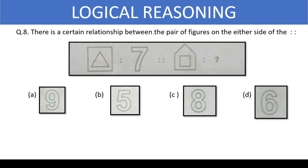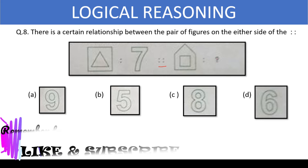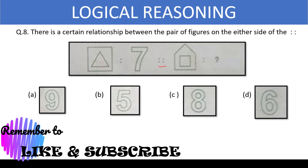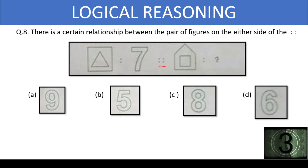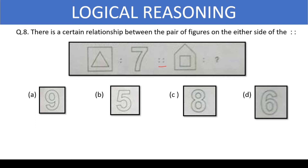There is a certain relationship between the pair of figures on either side of the four dots. Find the number that should come in place of the question mark. The image inside has one less side than the image outside. For example, a triangle has three sides and a square has four sides, and the sum of the two is the number indicated. Here, the square has four sides and the pentagon has five sides — four plus five is nine. So the answer is option A.